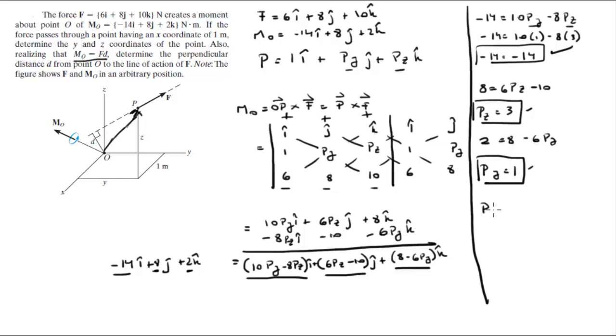So in conclusion, p sits at 1 in the x, 1i, plus 1 in the y, 1j, plus 3 in the k, 3k.